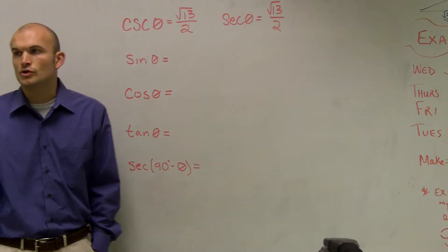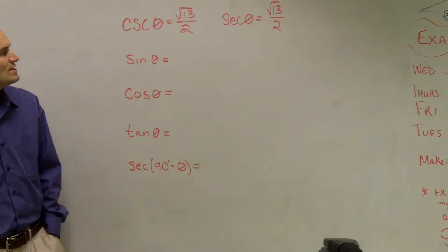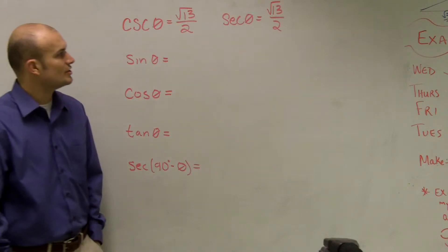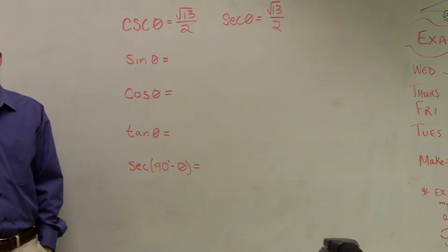Okay, let's just say I'm giving you guys these two numbers. Let's say cosecant of theta is square root of 13 over 2 and secant of theta is square root of 13 over 2.